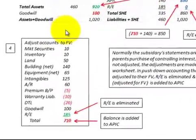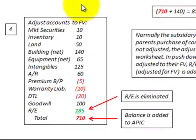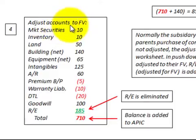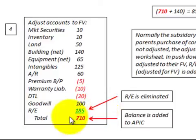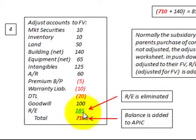Now let's look at the adjustments we have to make for our push-down accounting example. Based on the difference between book value and fair value, these are the adjustments to our asset and liability accounts. We also have retained earnings on the balance sheet at its book value of $185,000. That retained earnings is going to be eliminated, giving us total adjustments of $710,000. That $710,000 plus the retained earnings adjustment balance will be added to additional paid-in capital for the subsidiary.